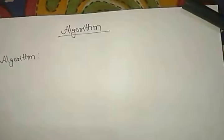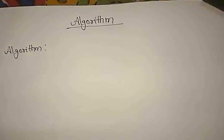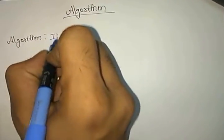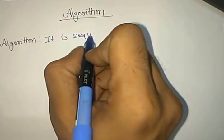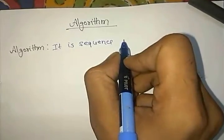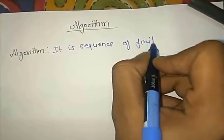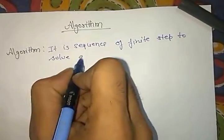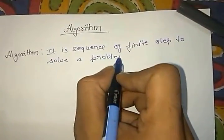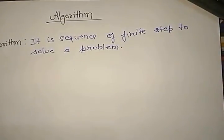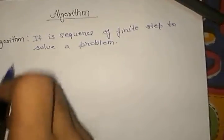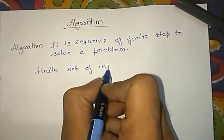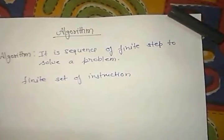If you read any subject you should know the definition of that subject, or what is the meaning of that subject. So what is an algorithm? An algorithm is a sequence of finite steps to solve a problem, or you can say it is a finite set of instructions.